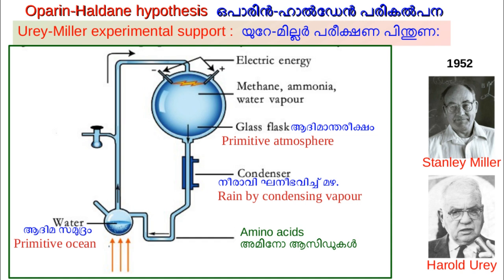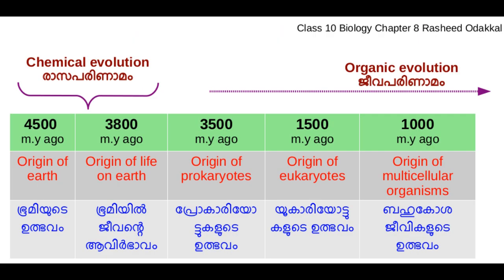You can look at illustration 8.2 in the textbook. The primitive cell is believed to have formed around 3,800 million years ago. Then prokaryotes and from them eukaryotes were evolved. Multicellular organisms may have evolved from a colony of eukaryotes.